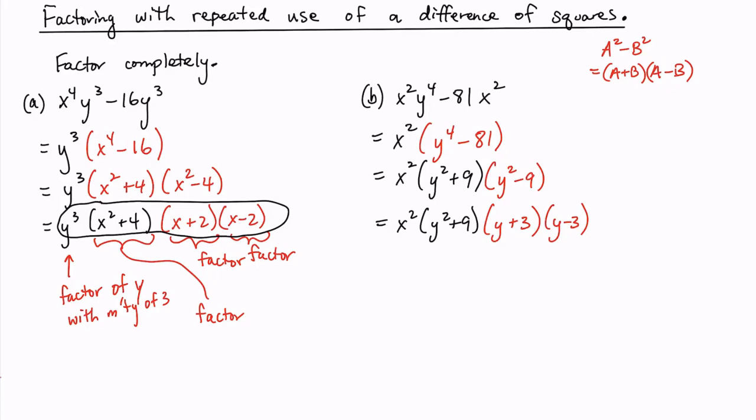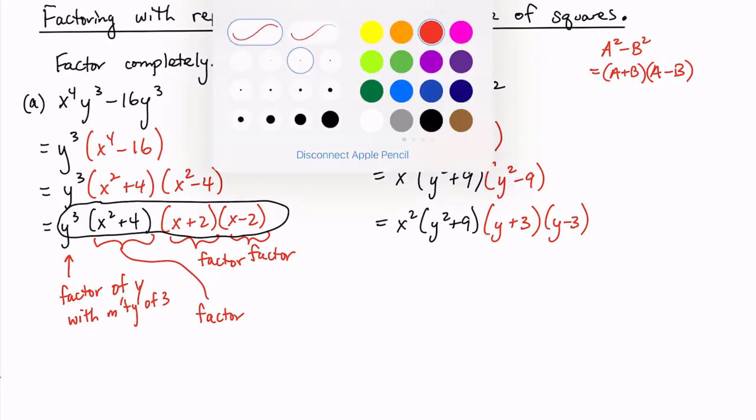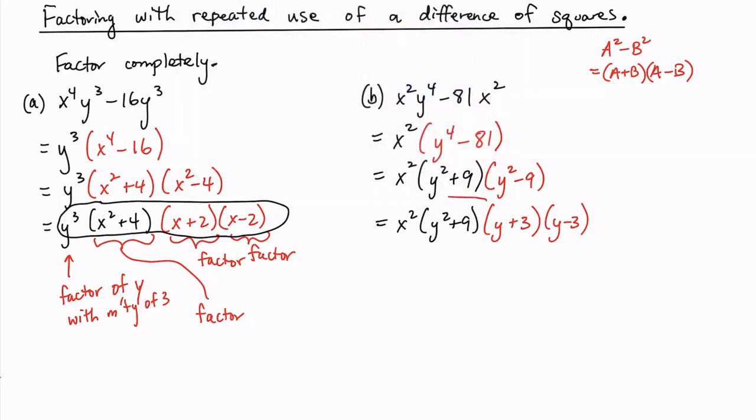Once again, we have four factors. But the factor of x has multiplicity of 2. Circle our answer. And we have factored this completely.